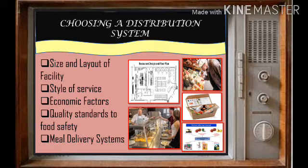When choosing a distribution system in food service, there are some considerations. First is size and layout of facility, second is style of service, third is economic factors, fourth is quality standards related to food safety, and lastly the meal delivery system.